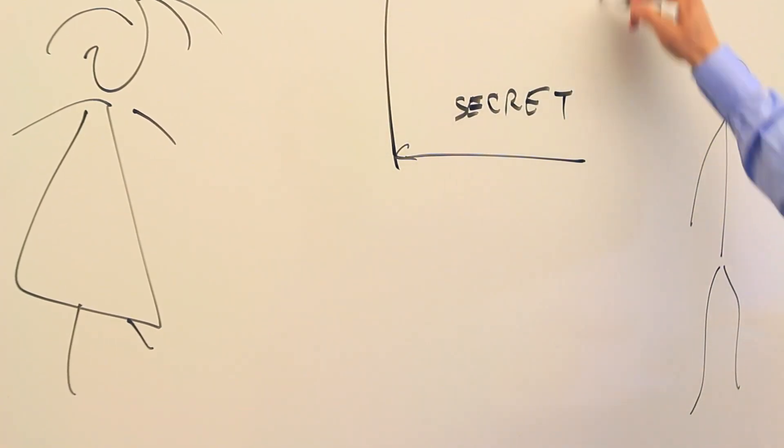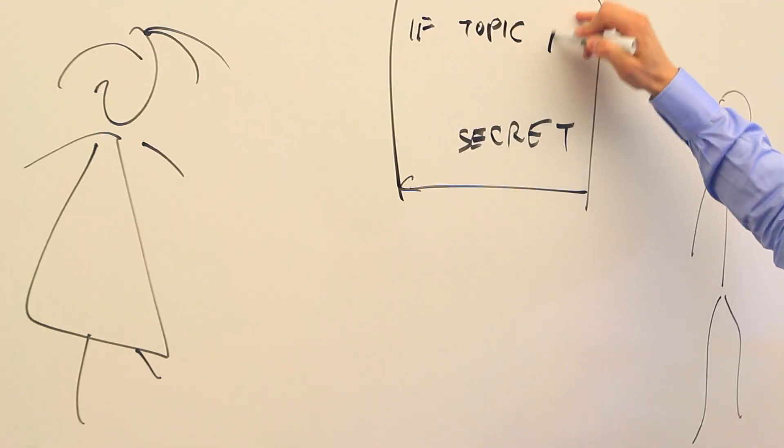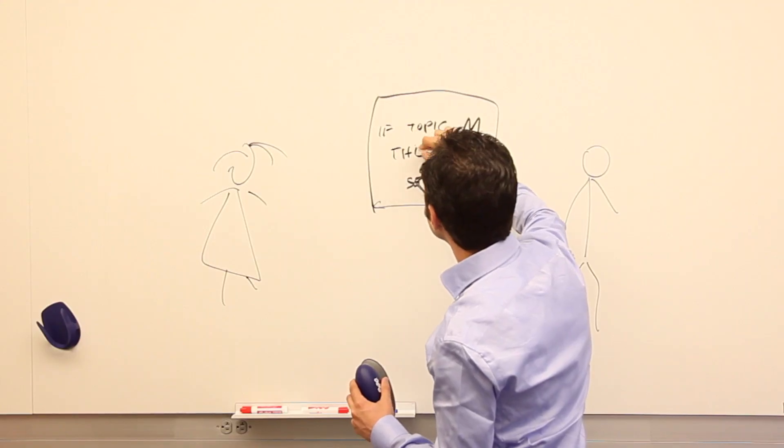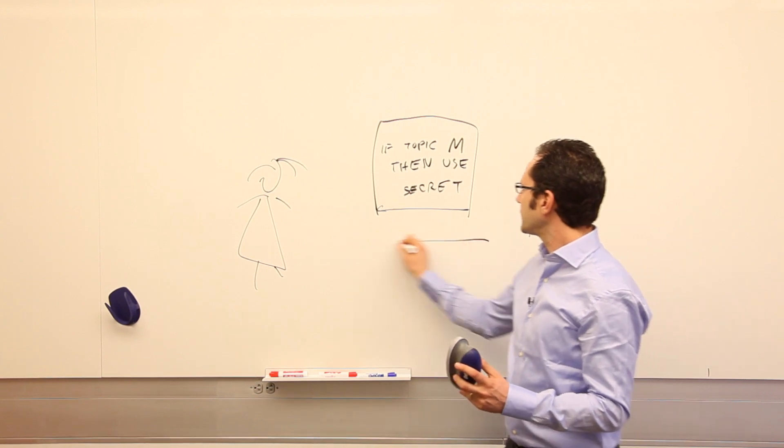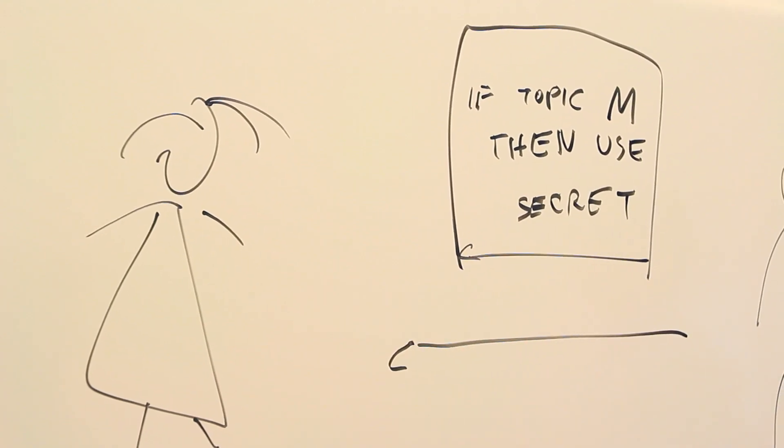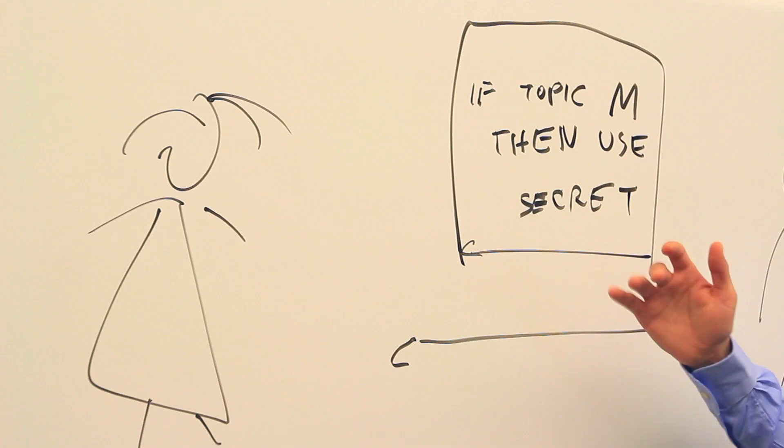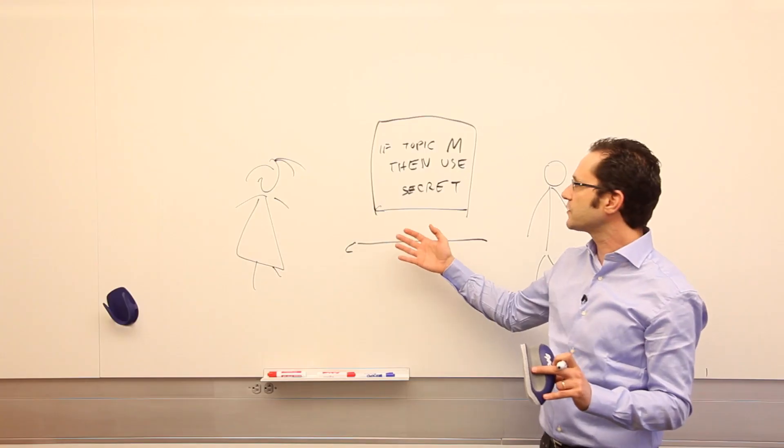So instead, I'm writing a program that if the topic is M, then use the secret key to decrypt. So I can give my colleague this program, and whenever she gets an encrypted message, she could feed that message to this program and then get the message if it's on this topic.